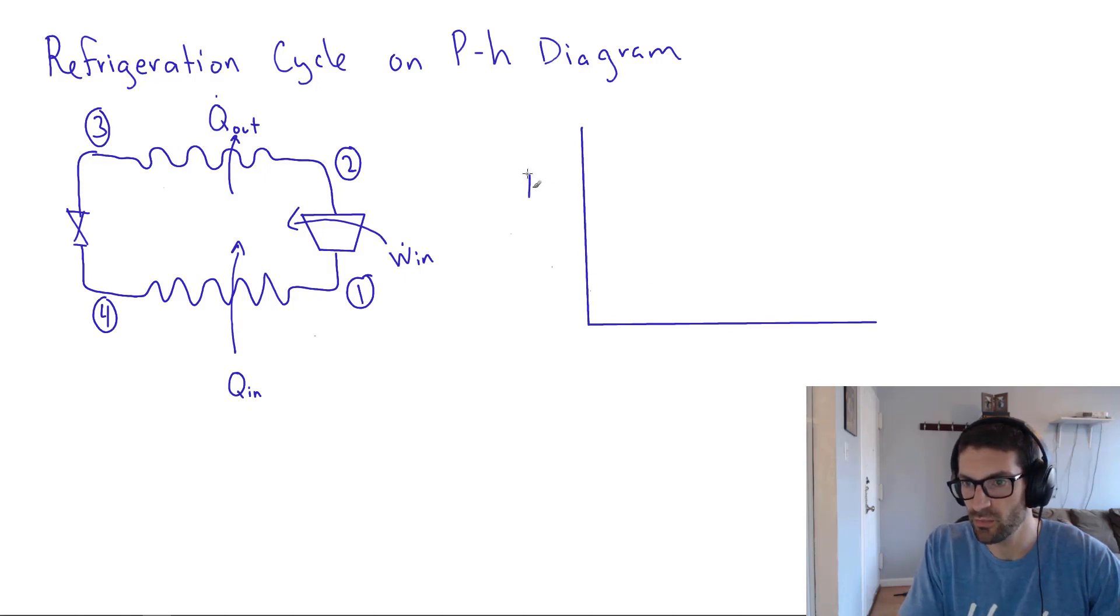What we can do is we can draw the pressure enthalpy curve for a refrigerant. And this is a generic curve, you can get this for any particular curve. And I won't be able to draw the shape perfectly. I'm sure it varies from one refrigerant to another. But I really just want you to get the principle here. This is the vapor dome. So out here you have a compressed liquid. And in the middle, you have a saturated mixture. And then out here you have superheated vapor.